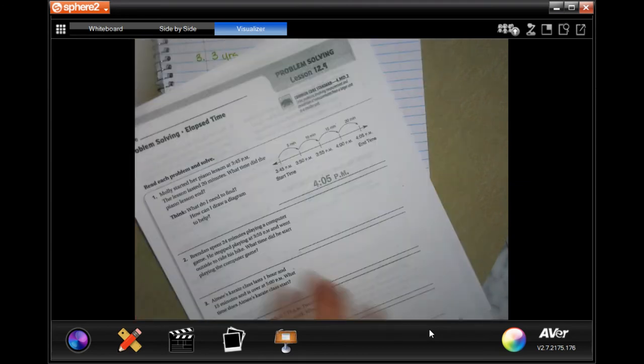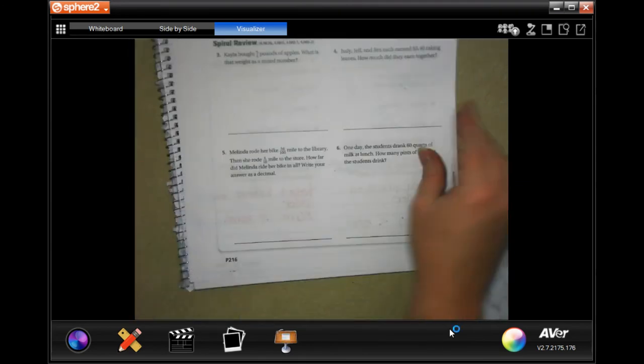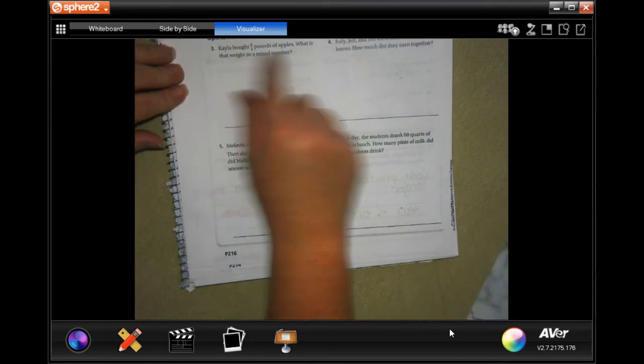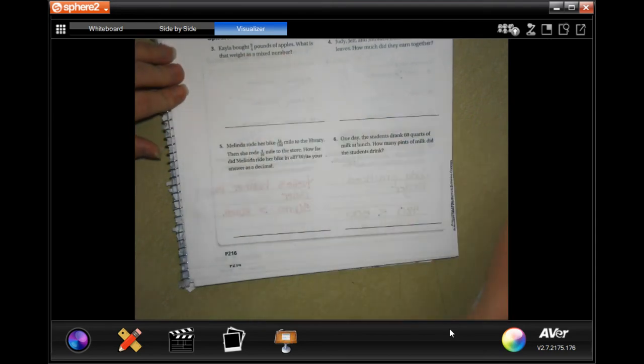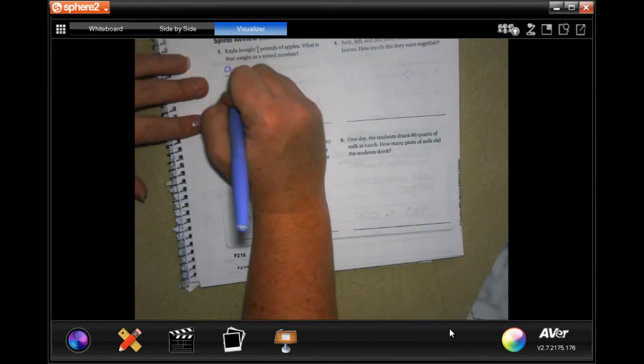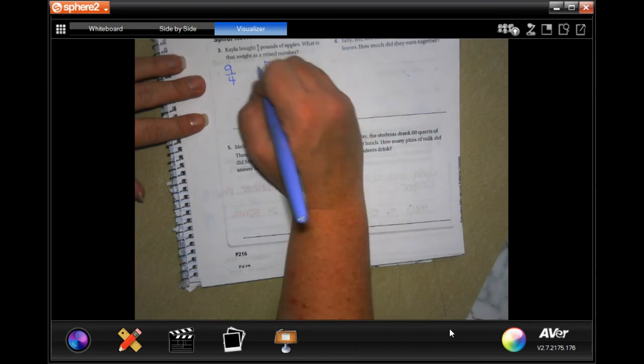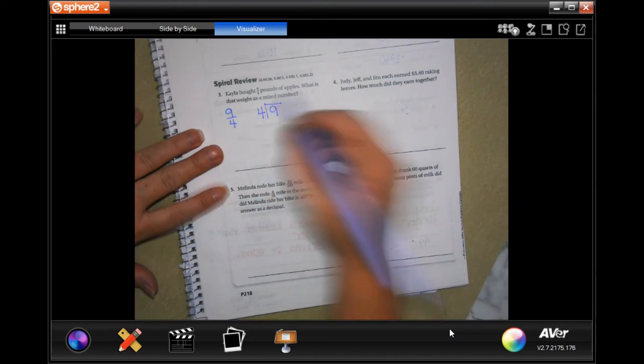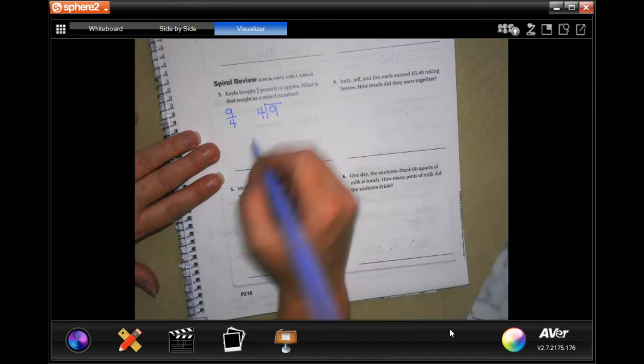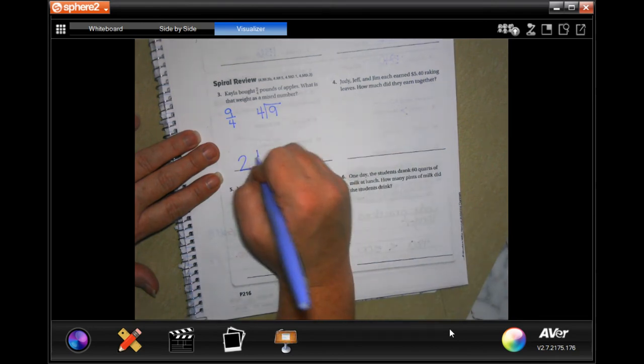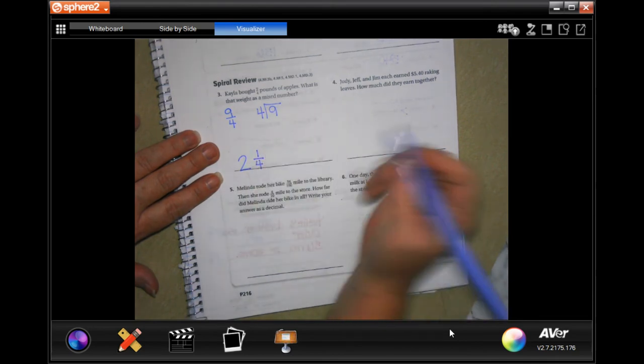We're going to go on to the back where you're going to do the lesson check just like always, and we're going to get down to this spiral review. They have nine fourths pounds of apples, what does that weigh to the next whole number? So nine fourths, we could scrap and divide, however I know that four times two is eight, and nine minus eight is one, and my denominator would stay the same.